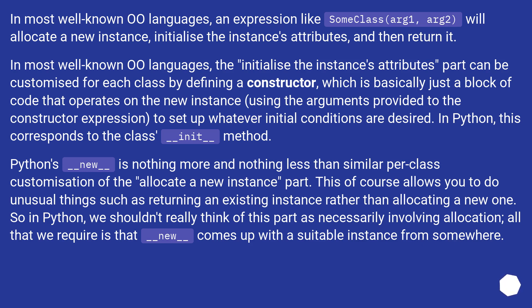Python's __new__ is nothing more and nothing less than similar per-class customization of the 'allocate a new instance' part. This of course allows you to do unusual things such as returning an existing instance rather than allocating a new one. So in Python, we shouldn't really think of this part as necessarily involving allocation. All that we require is that __new__ comes up with a suitable instance from somewhere.